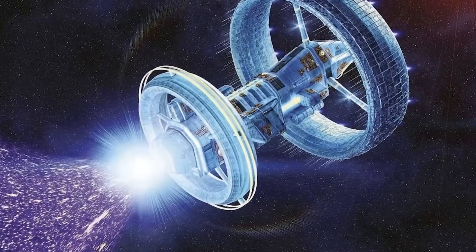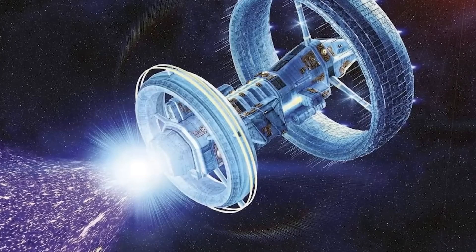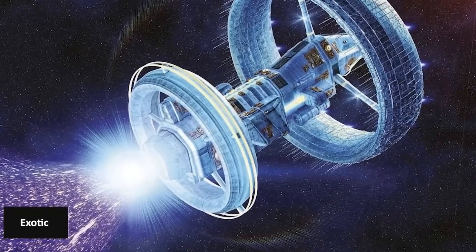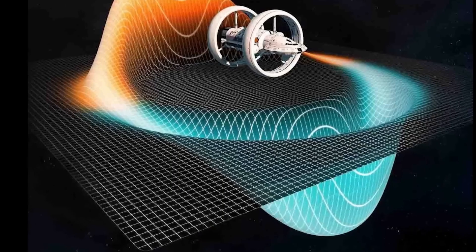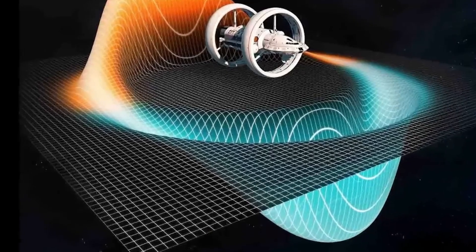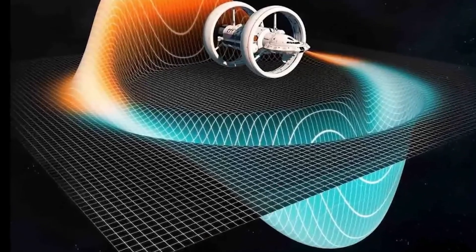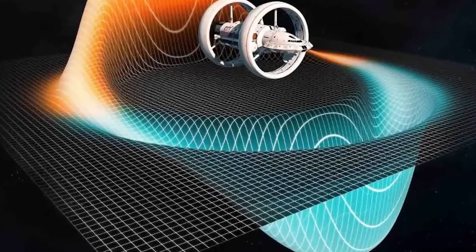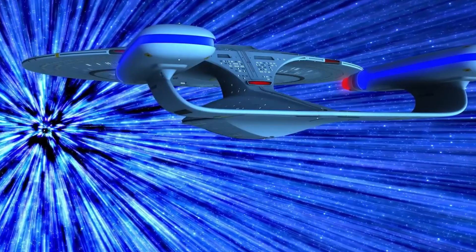Exotic matter is a theoretical form of matter with negative energy density and negative pressure, not found in nature. Many modifications were made to this concept until, in 2021, a former NASA engineer introduced a modification to the warp drive structure that could consume less energy. Still, it faced the challenge of needing exotic matter.